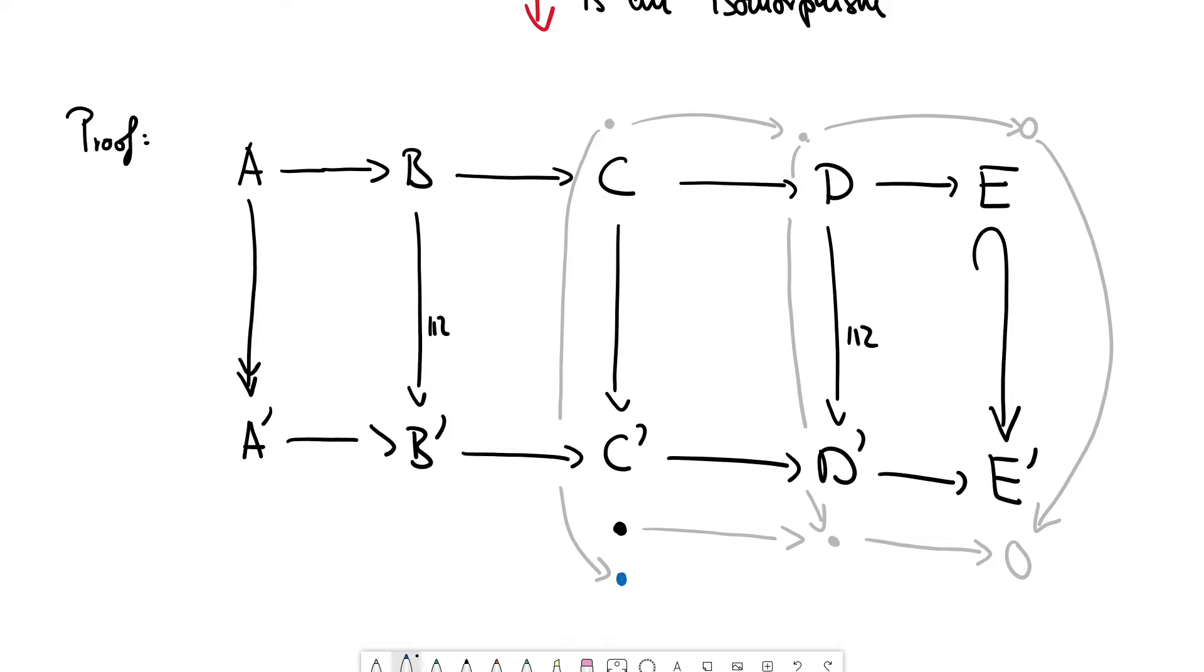And what we can say about this blue element is that, by the commutativity of the diagram, this is at least mapped to the same element in D prime as the black element. Which means that, if we look at the difference of the black and the blue element, let me draw the difference here. Black minus blue. This is then mapped to zero.